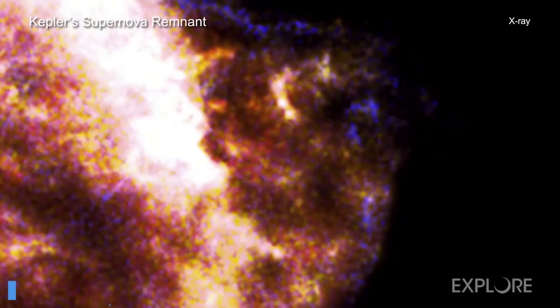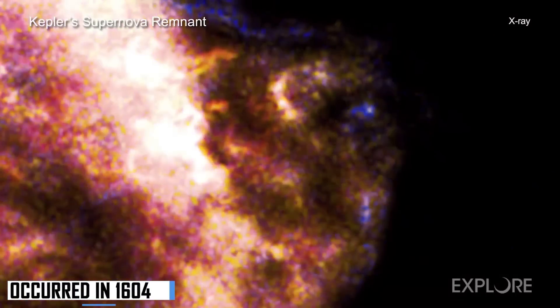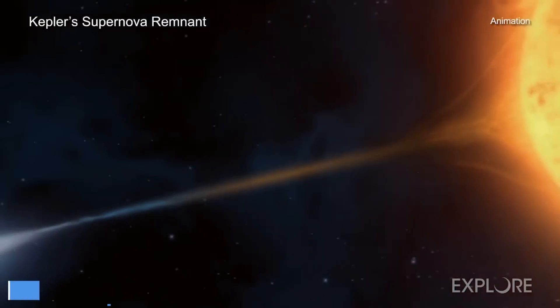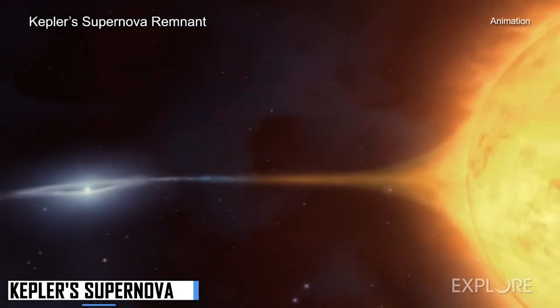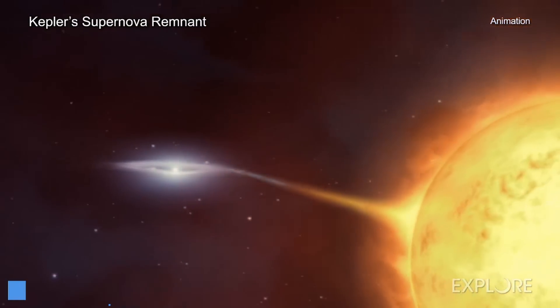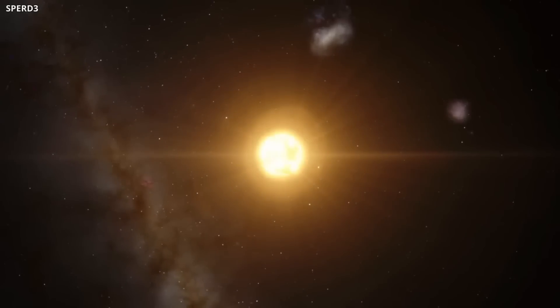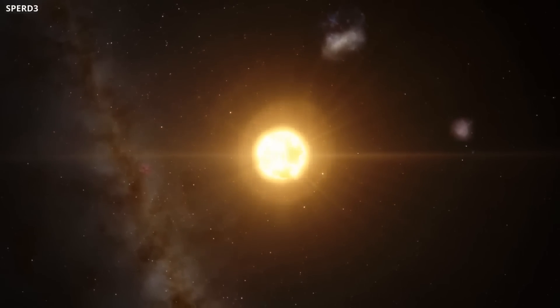The last supernova in our galaxy that was visible from Earth occurred in 1604. The event was known as Kepler's supernova, and it occurred around 20,000 light-years away from the Earth. Betelgeuse, in comparison, is only a few hundred light-years away.